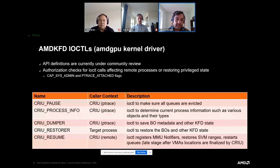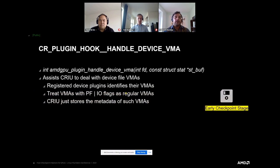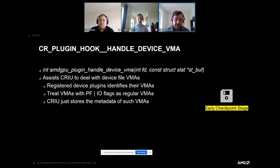All of these ioctls are validated in the kernel mode with the right security privileges and capabilities — KFD handles that. The first plugin hook we introduced to make checkpoint work is the handle_device_vma hook. It takes a file descriptor and a pointer to a struct stat. We need this because currently CRIU does not handle any VMA that has device file mappings — it looks at /proc/pid/maps files and if certain flags have a physical function or IO attribute set, they are not treated as regular VMAs by CRIU.